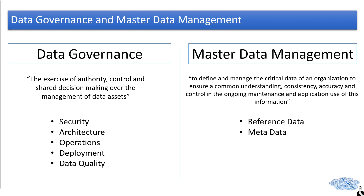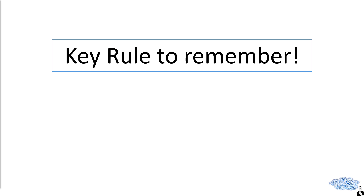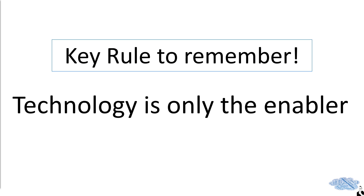Throughout all of this, there's one thing I've not mentioned at all, and it's a key rule to remember: technology. The reason I haven't mentioned technology is because technology is only your enabler — it will only help you get to your end goal, but it's not a key factor. The key factors are your people, because the technology is not going to build itself, and within 18 months it's going to change. You may need to pivot away from a technology or pivot to a new one for commercial benefits.